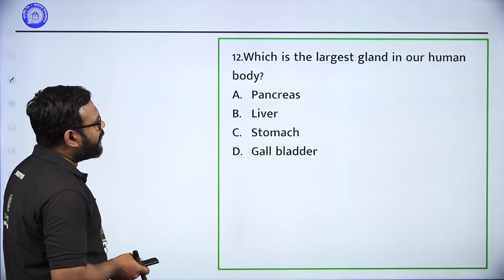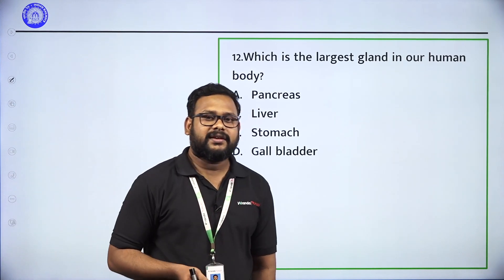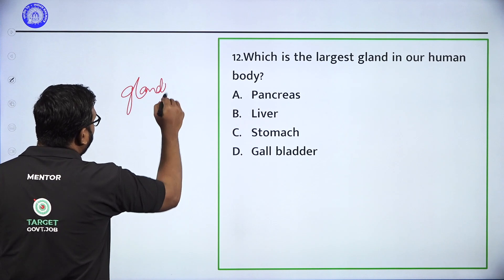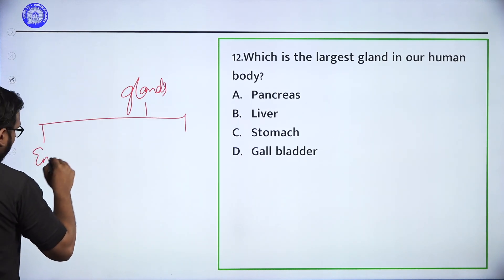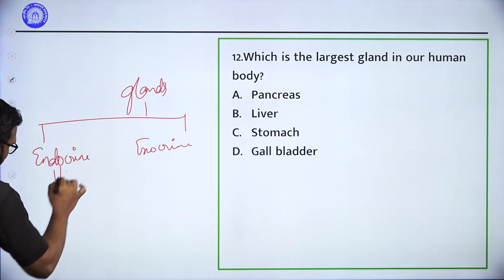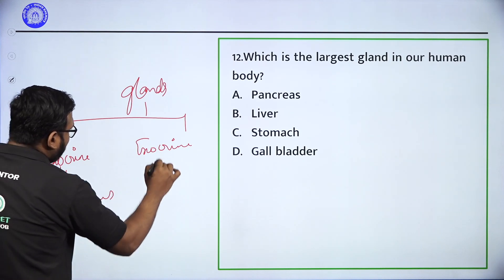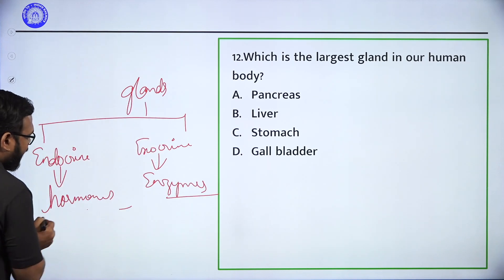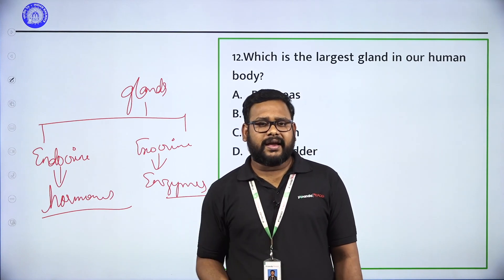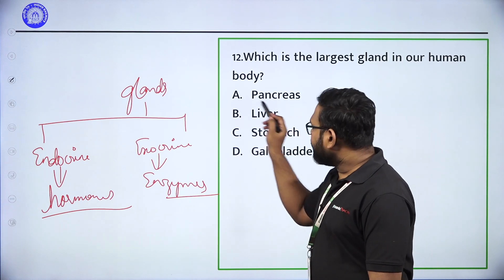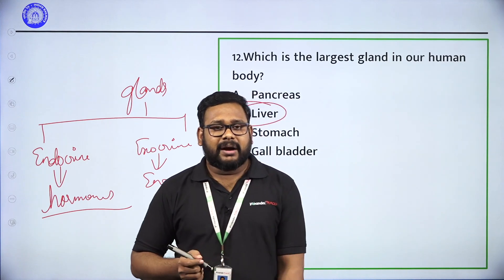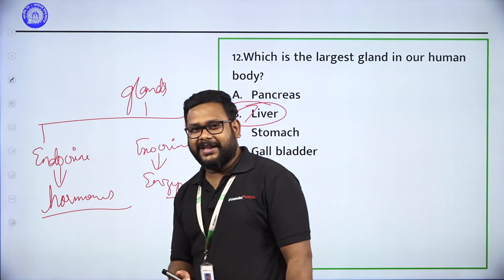Next question: Which is the largest gland in the human body? Pancreas, liver, stomach, or gallbladder? The largest gland is called liver. Bile juice is secreted by the liver and stored in the gallbladder. Option B, liver, is the correct answer.